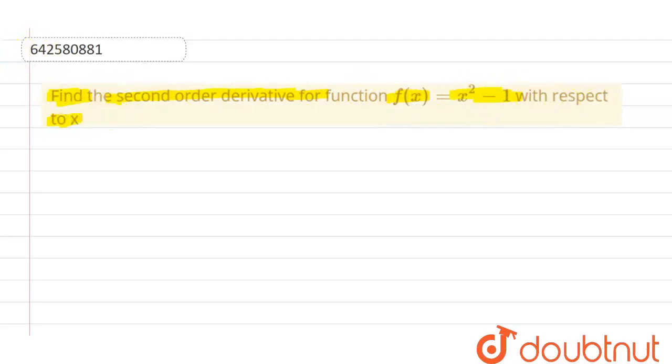So, now we can start with the given f(x). The given f(x) is equal to x square minus 1. Now we can differentiate it with respect to x.